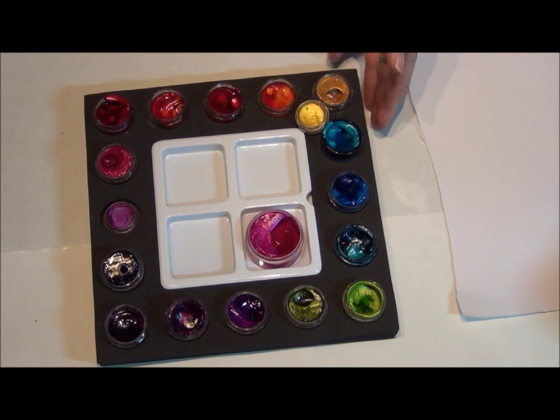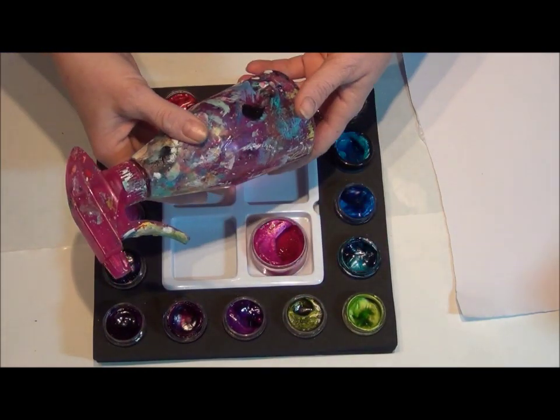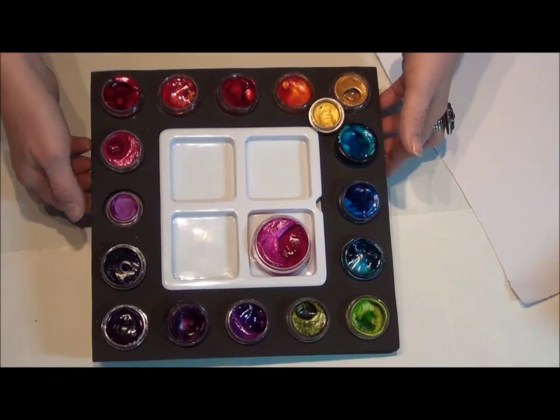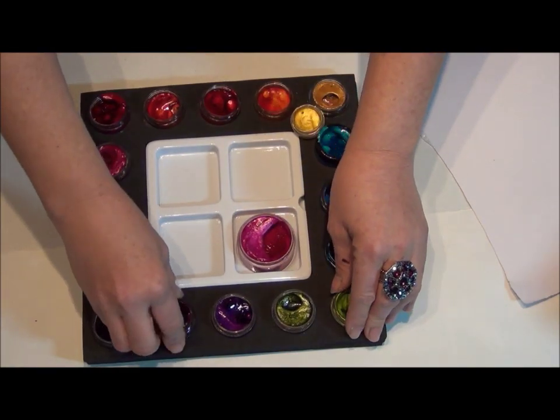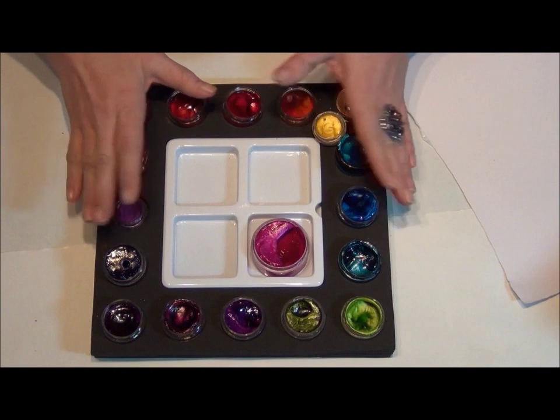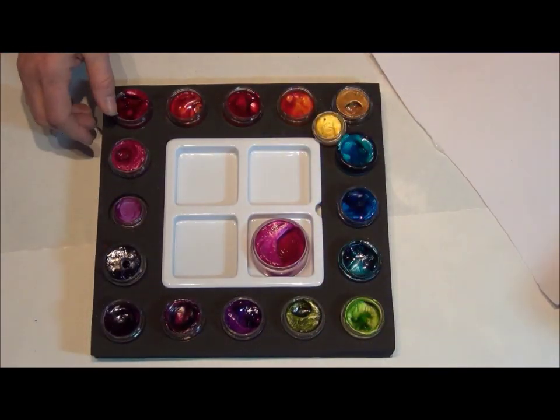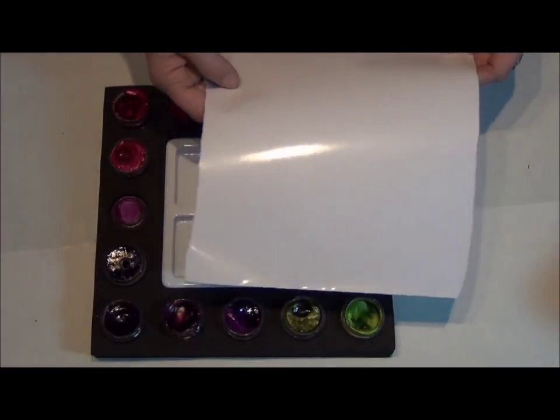First things first, in order to get started today you'll need your paints, a spray bottle of water, some watercolor paper, and some sort of palette. Today I'm using one of our foam palettes which are perfect because the Twinks can nestle right into the little holes. If you don't have one of these, palette paper works well too.